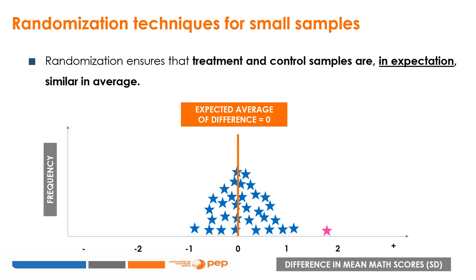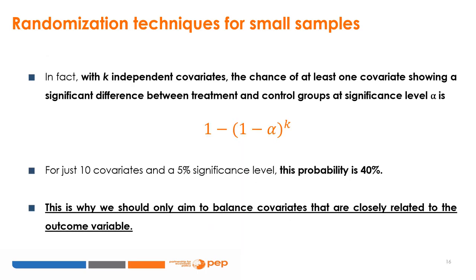Especially in small samples, if we randomise using a single random draw, it is not unlikely to find an unbalanced sample. With k independent covariates, the chance of at least one covariate showing a significant difference between treatment and control at significance level alpha is given by a specific formula. For just 10 covariates when alpha equals 5%, this probability is 40%. This is why we should only aim to balance covariates closely related to the outcome variable — attempting to balance all covariates is bound to fail.